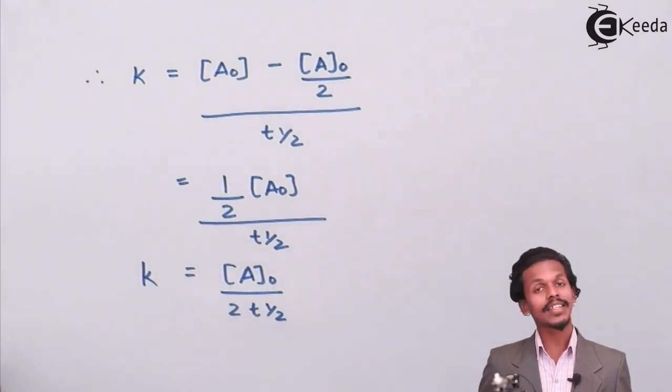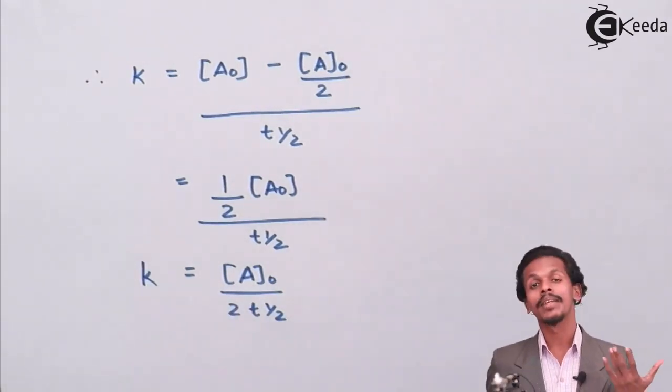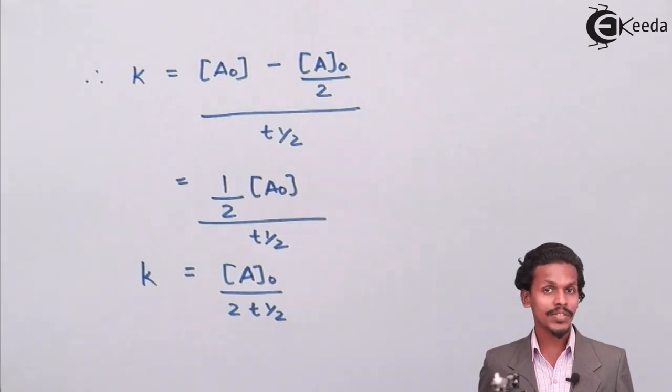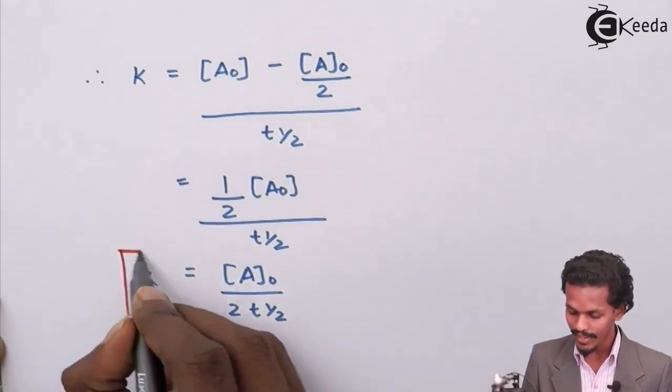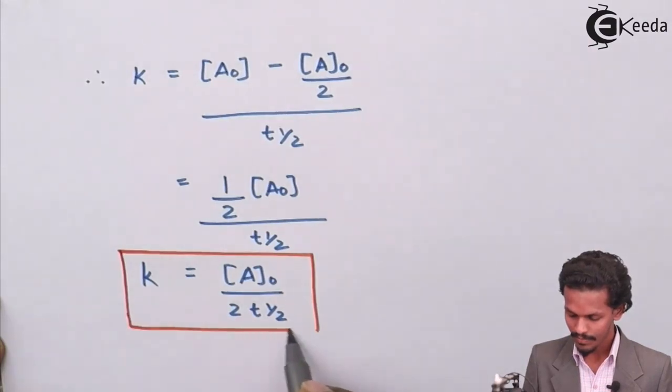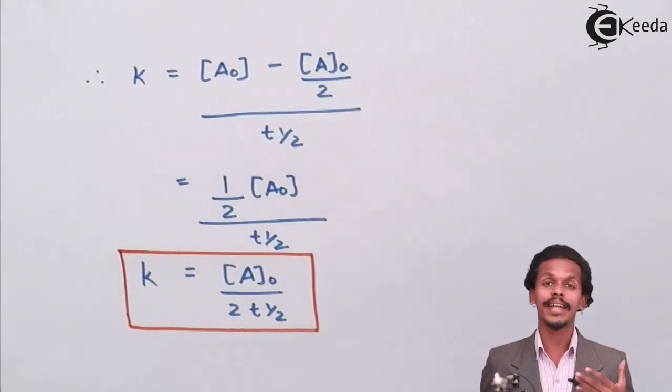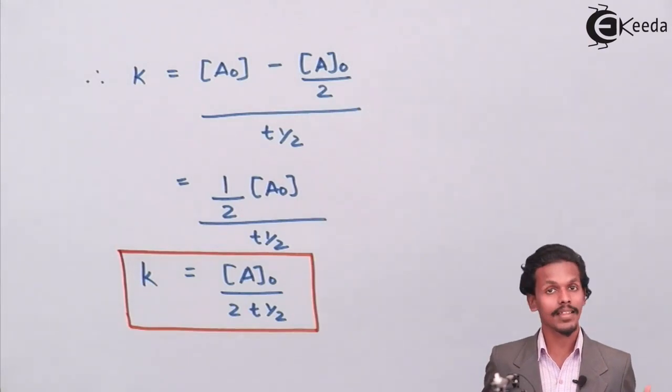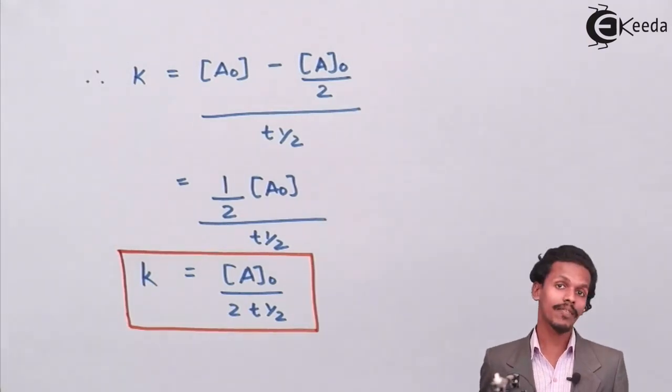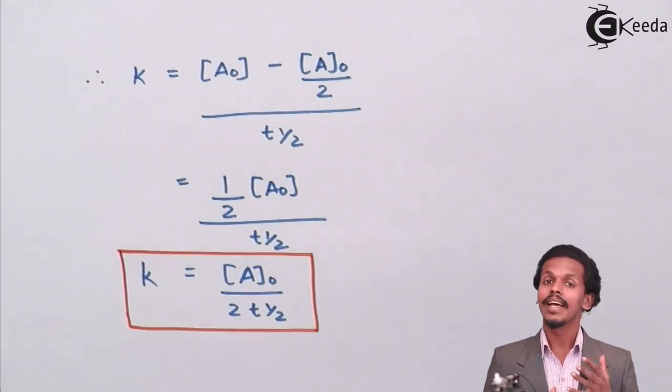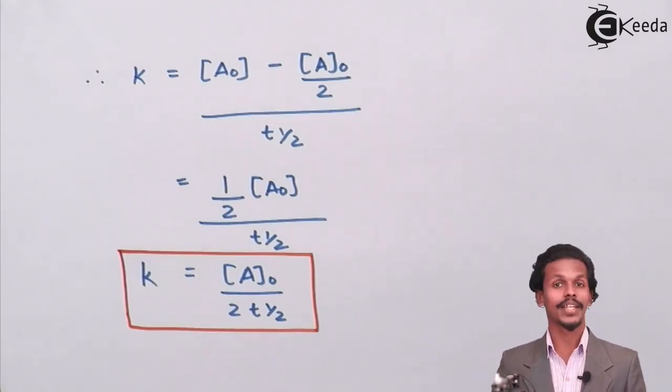So this is the relation that we have got between the rate constant and half-life for a zero-order reaction. This implies that the rate constant is dependent in this case on the initial reactant, and the half-life is related with the rate constant in such an equation.